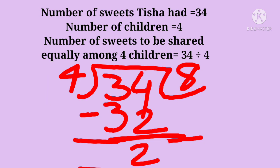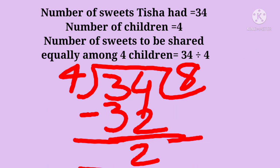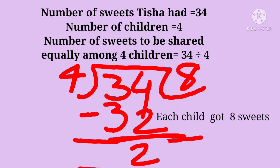As we have divided 34 by 4, we can see 4 eights are 32, so 8 is the quotient but 2 is the remainder. That means each child got 8 sweets. Out of 34, only 32 sweets were equally divided among 4 children, and 2 sweets were left over. The final answer is each child got 8 sweets.